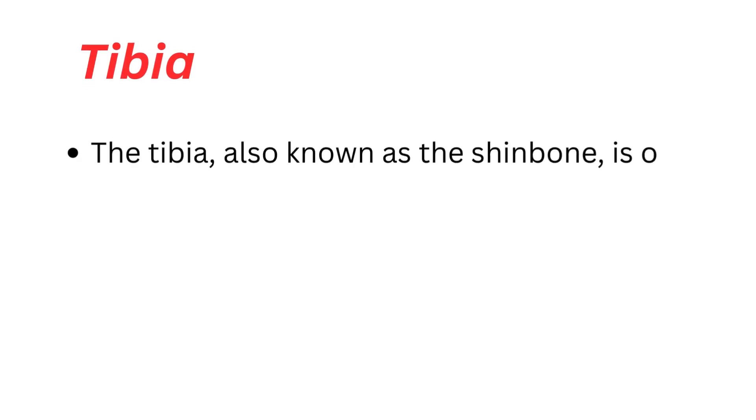The tibia, also known as the shinbone, is one of the two long bones in the lower leg, the other being the fibula. Here's an overview of the tibia bone.